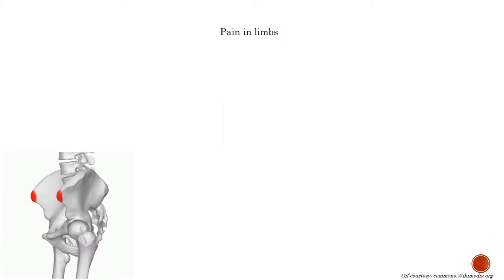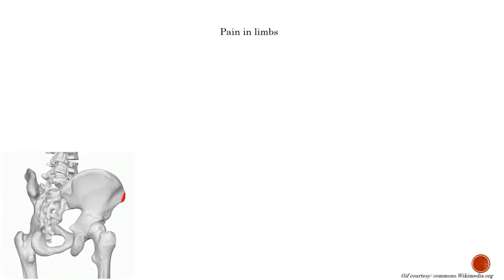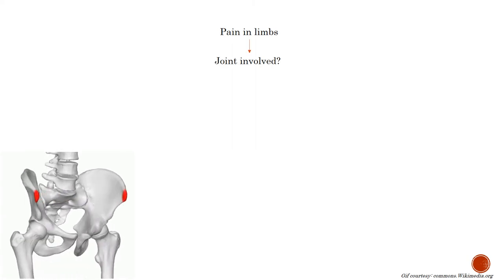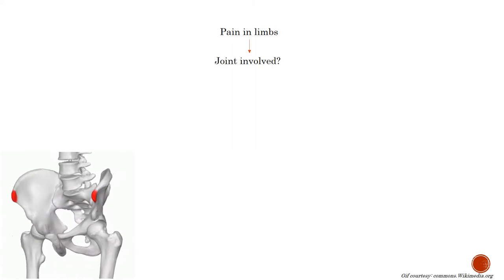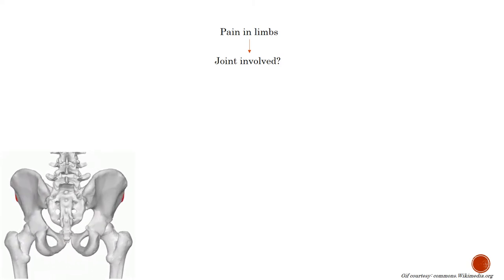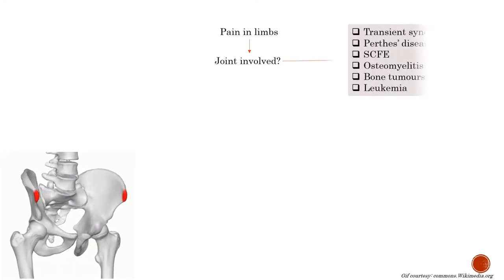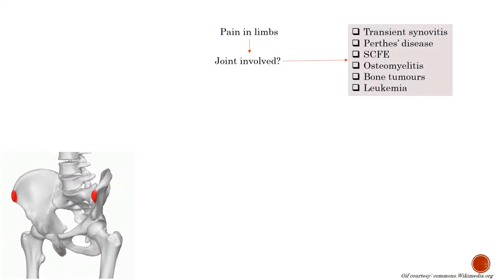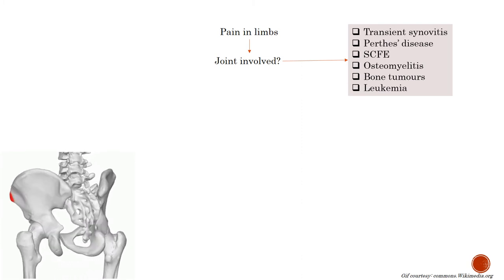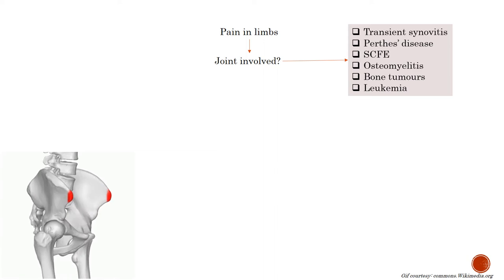Whenever a child presents with complaints of pain in limbs, you must first assess whether the joint is involved or not. This is done by clinical examination, the most common method being PGALS, and if required, imaging of the joint. If no joint involvement, you must rule out other differential diagnoses: transient synovitis, Perthes disease, slipped capital femoral epiphysis, osteomyelitis, bone tumors, and leukemia.